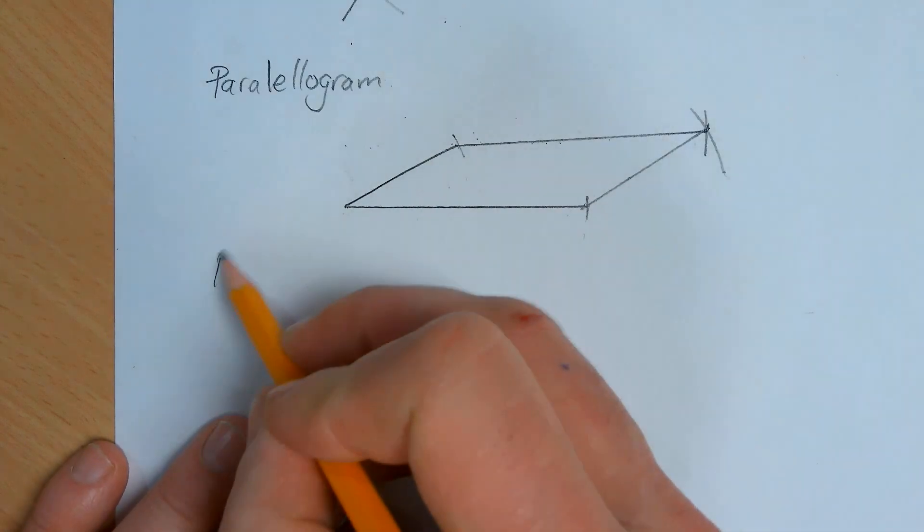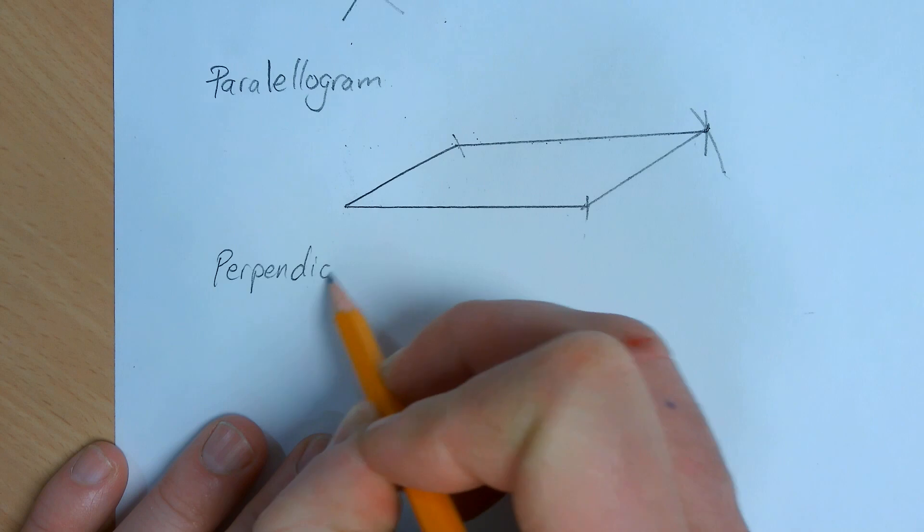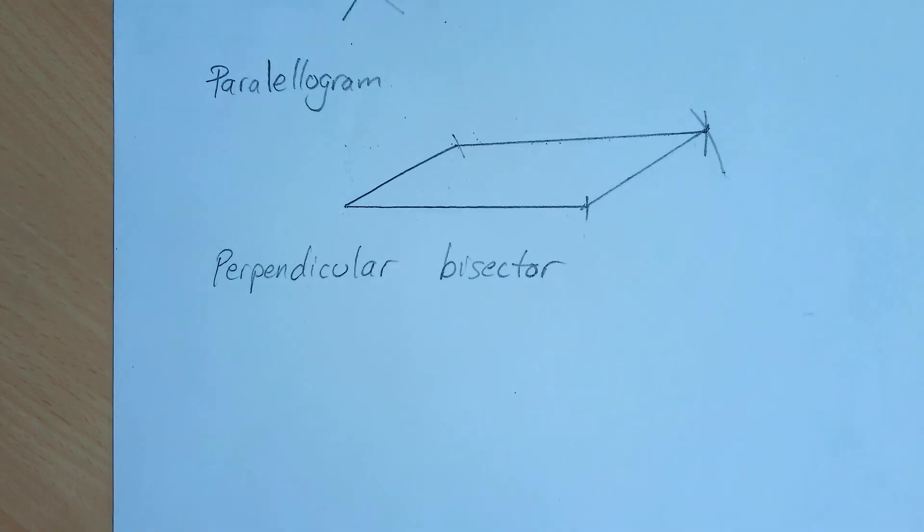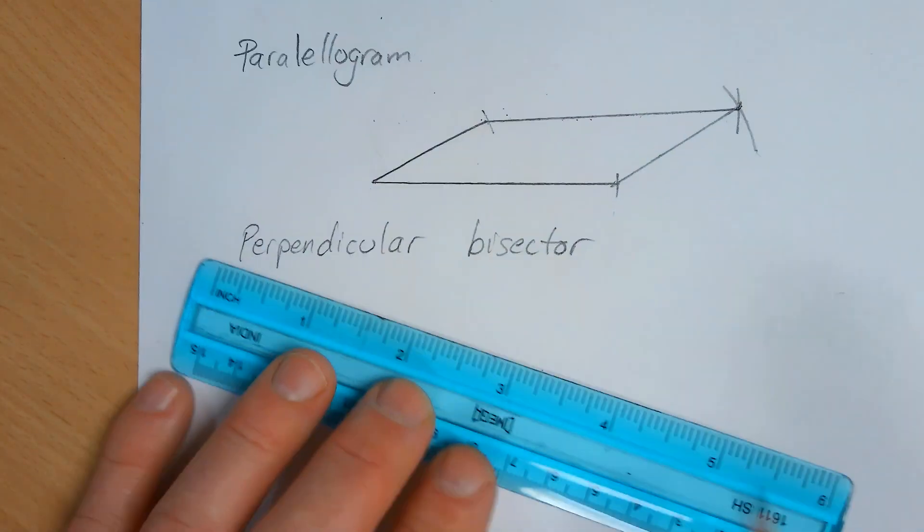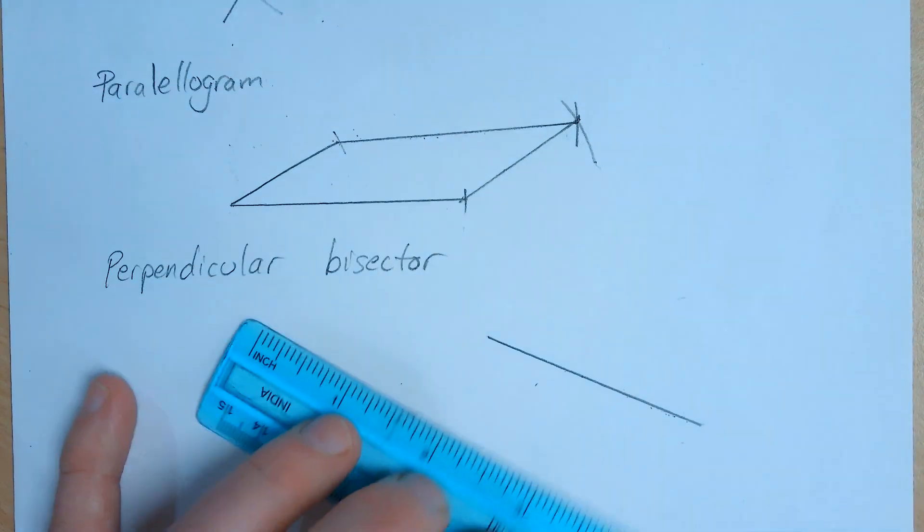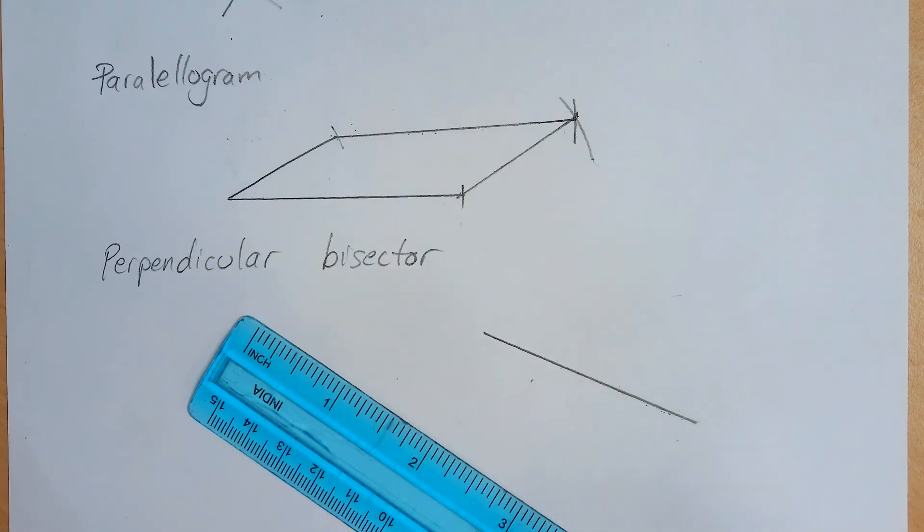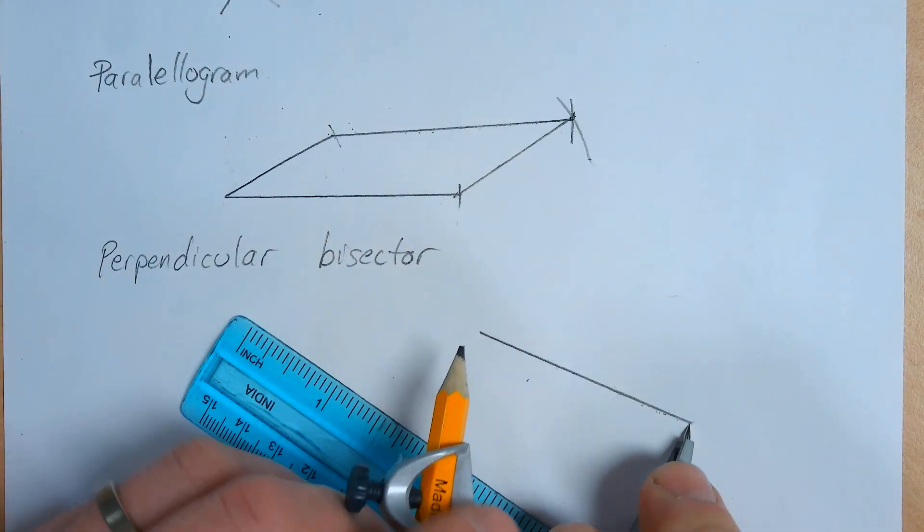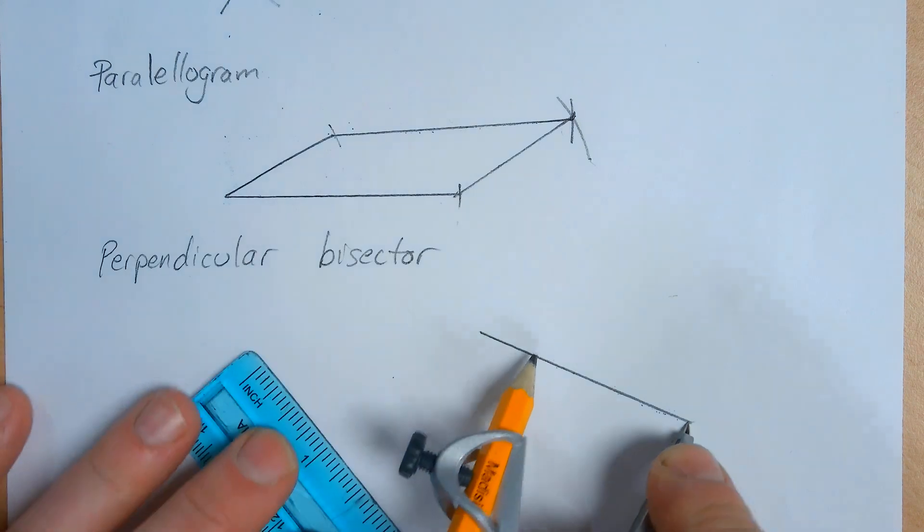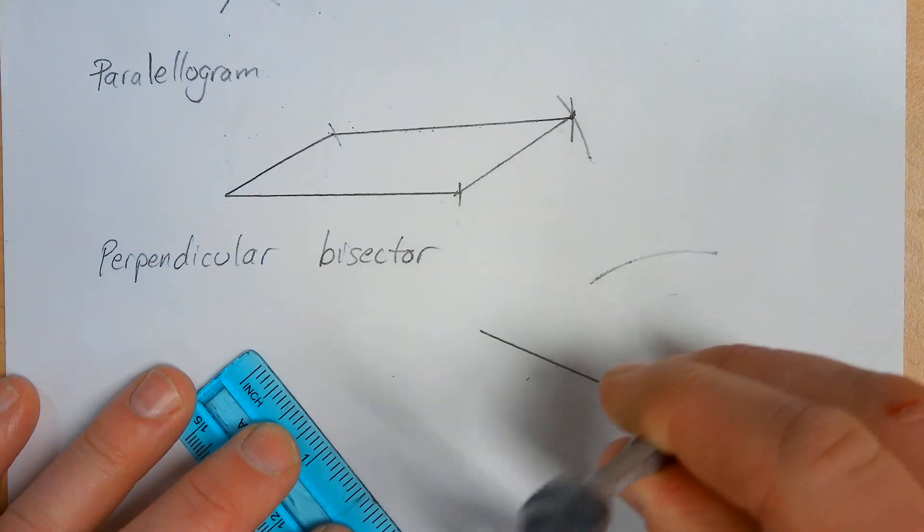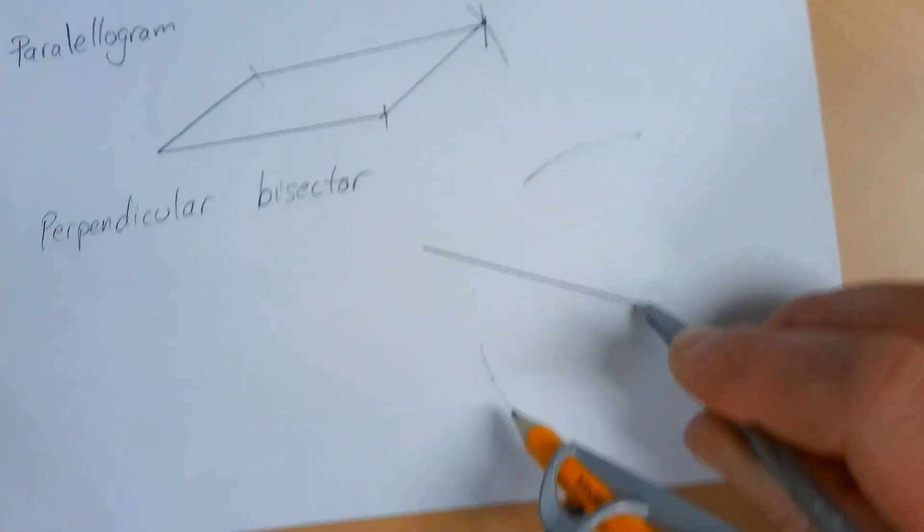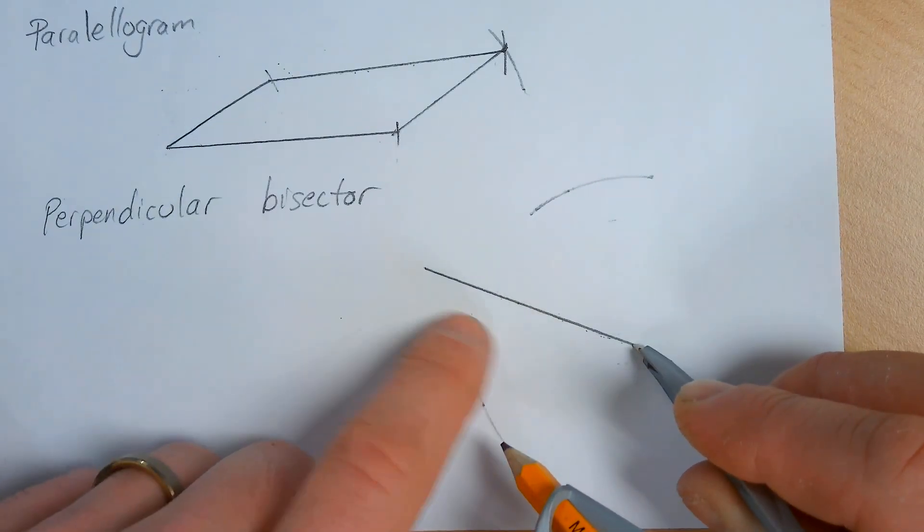Next is the perpendicular bisector. For this you'll need to make a segment. Then you need to set the compass to at least halfway. So this won't work, this will work. Mark above, mark below. Below, above, and below the center, which we don't know where it is exactly but the middle is somewhere here. So above there and below there. Need this curve. Some people just like to connect the whole curve.